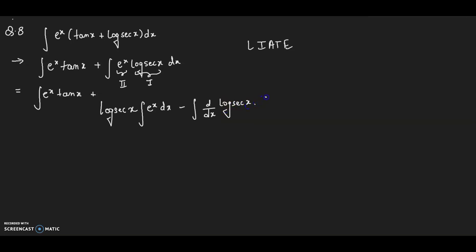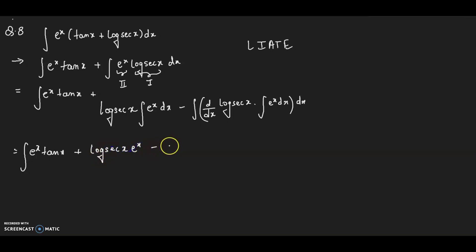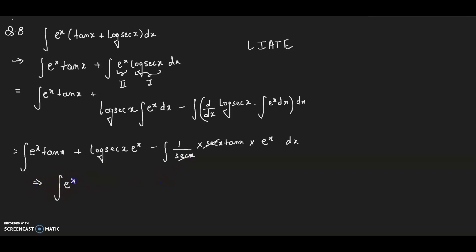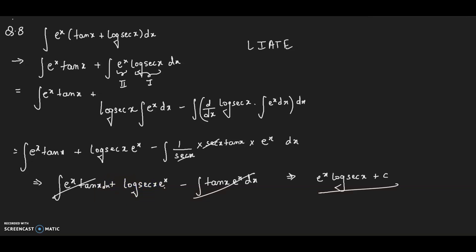The derivative of log(sec x) is 1/sec x · sec x · tan x = tan x. So we get eˣ log(sec x) minus integration of tan x · eˣ dx. This integration of eˣ tan x cancels with the original eˣ tan x term. The final answer is eˣ log(sec x) + C. I'll continue with definite integrals and will also cover important questions of these chapters.